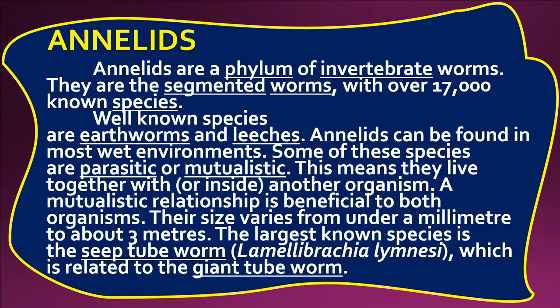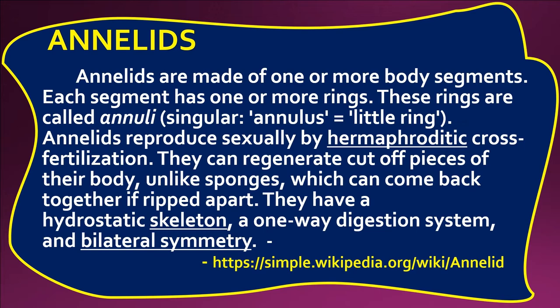A mutualistic relationship is beneficial to both organisms. Their size varies from under a millimeter to about three meters. The largest known species is the seep tube worm, Lamellobrachia luymesi, which is related to the giant tube worm. Annelids are made of one or more body segments. Each segment has one or more rings called annuli (singular: annulus, meaning 'little ring').